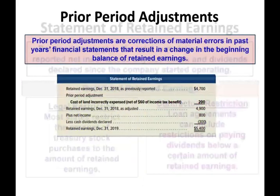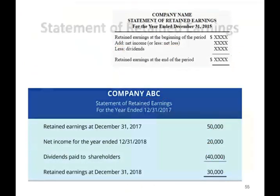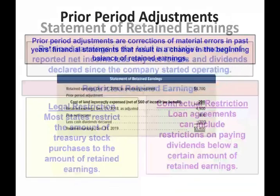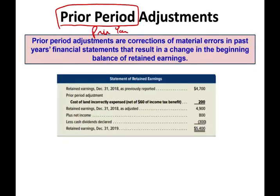Now we looked at what I call a clean retained earnings statement — basically simple, clean retained earnings. Sometimes the company might have errors or mistakes from a prior period. When you have a mistake from the prior year, you cannot go back and change the prior year because the revenues and expenses are closed out. So this error goes into retained earnings. Prior period adjustments are corrections of material errors in past financial statements that result in a change to the beginning retained earnings.